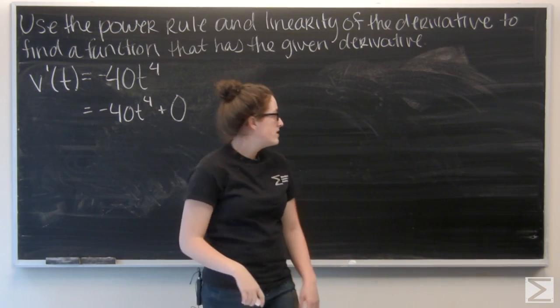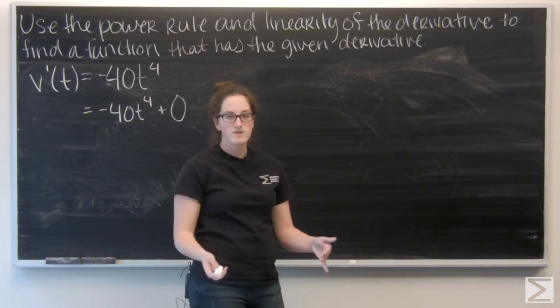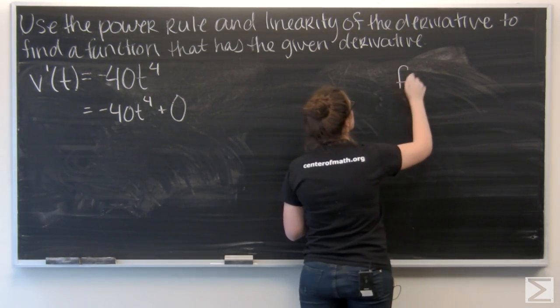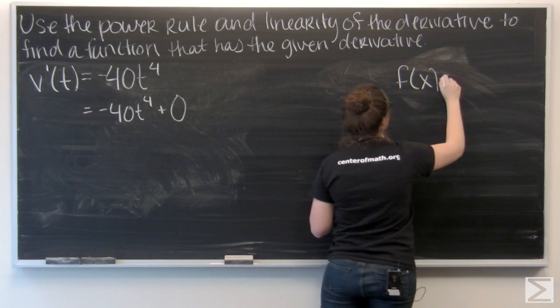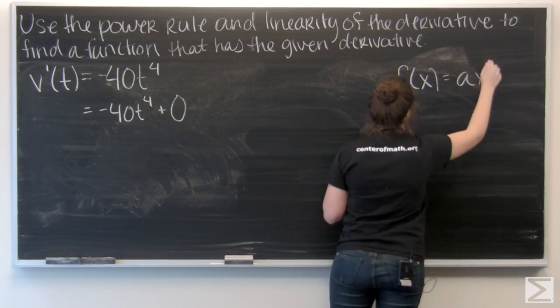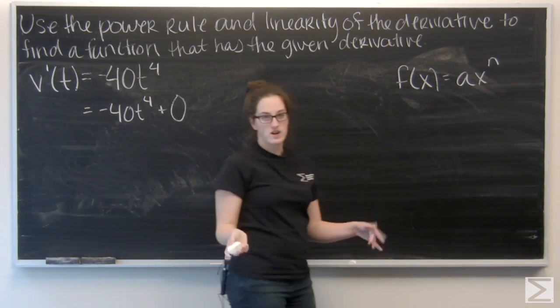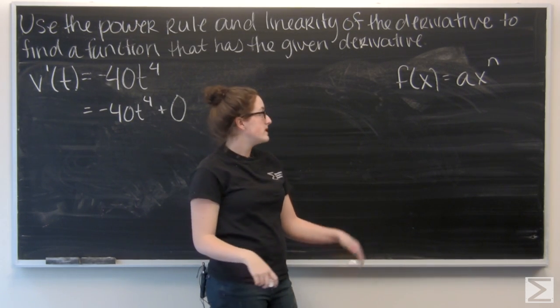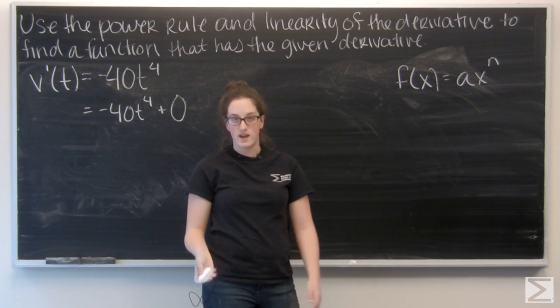And now let's think about the power rule. So the power rule says if I have some function ax to the n where a is just a constant and n is the exponent, the derivative of that is going to be n times a times x to the n minus 1.